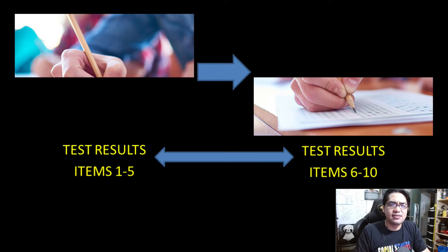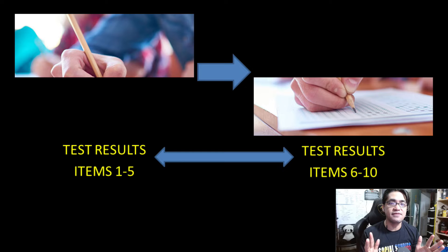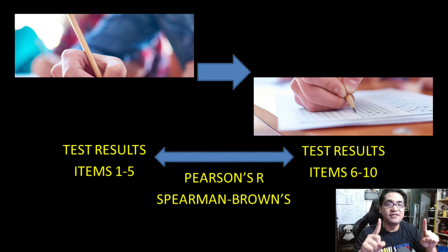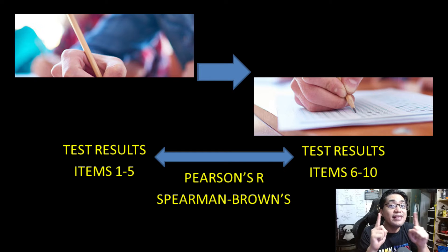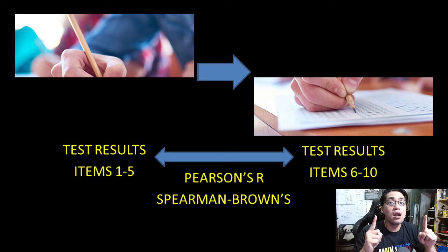You might ask: these two halves are not the same test — can we really compare them? As mentioned, if the two halves measure the same or related learning goals and objectives, they can be compared as if they were two instances of the same test. We can use Pearson's R or the Spearman-Brown prophecy formula to measure how similar the two halves are. If the halves are similar, the test is reliable; if not, it is not reliable.